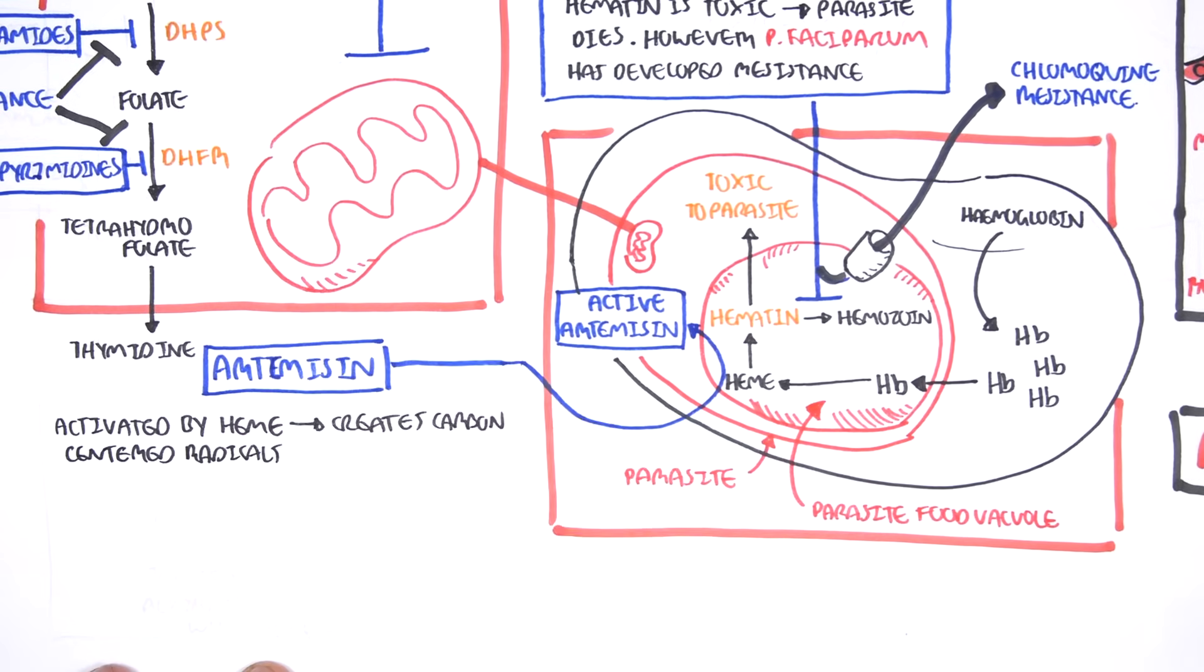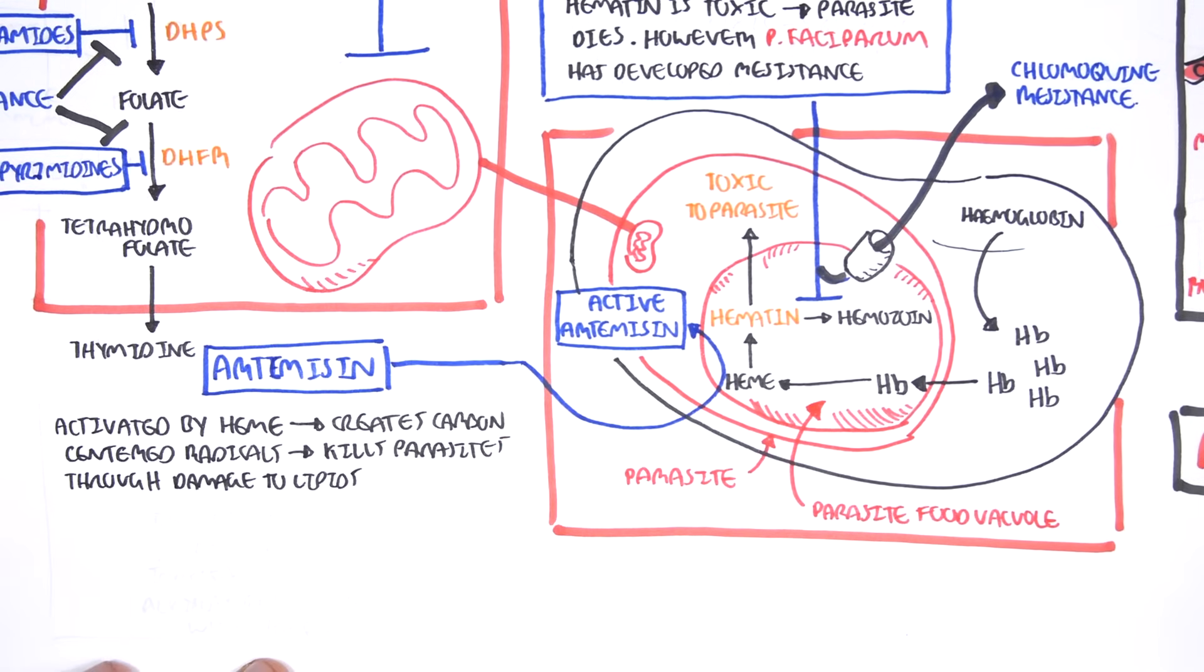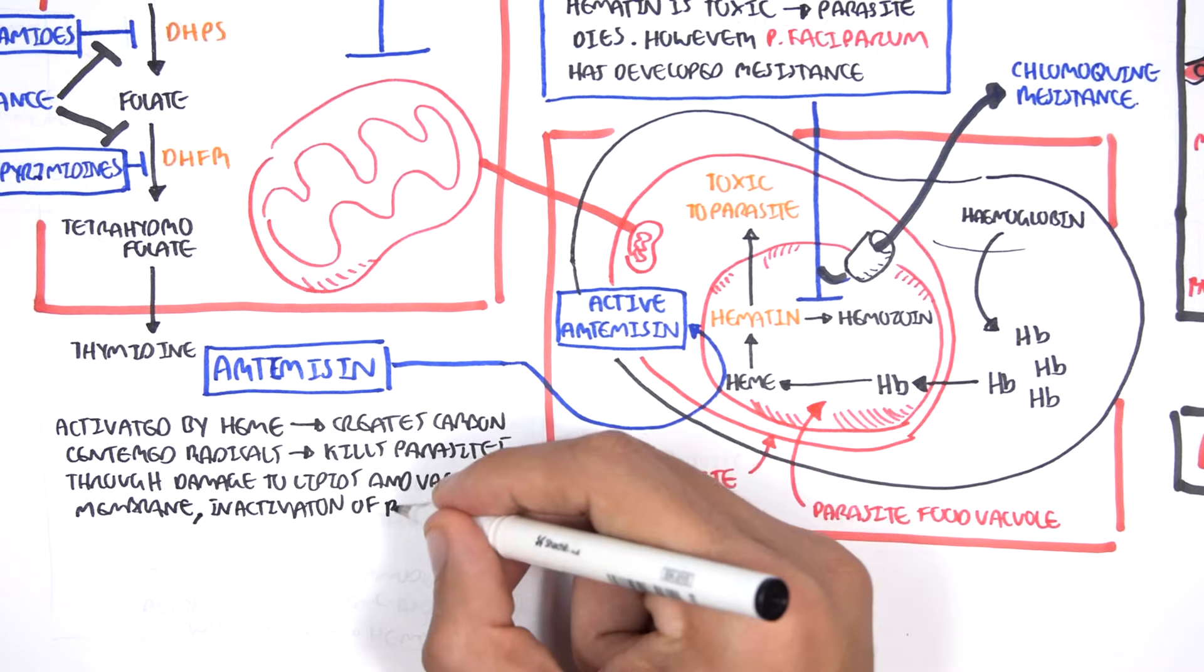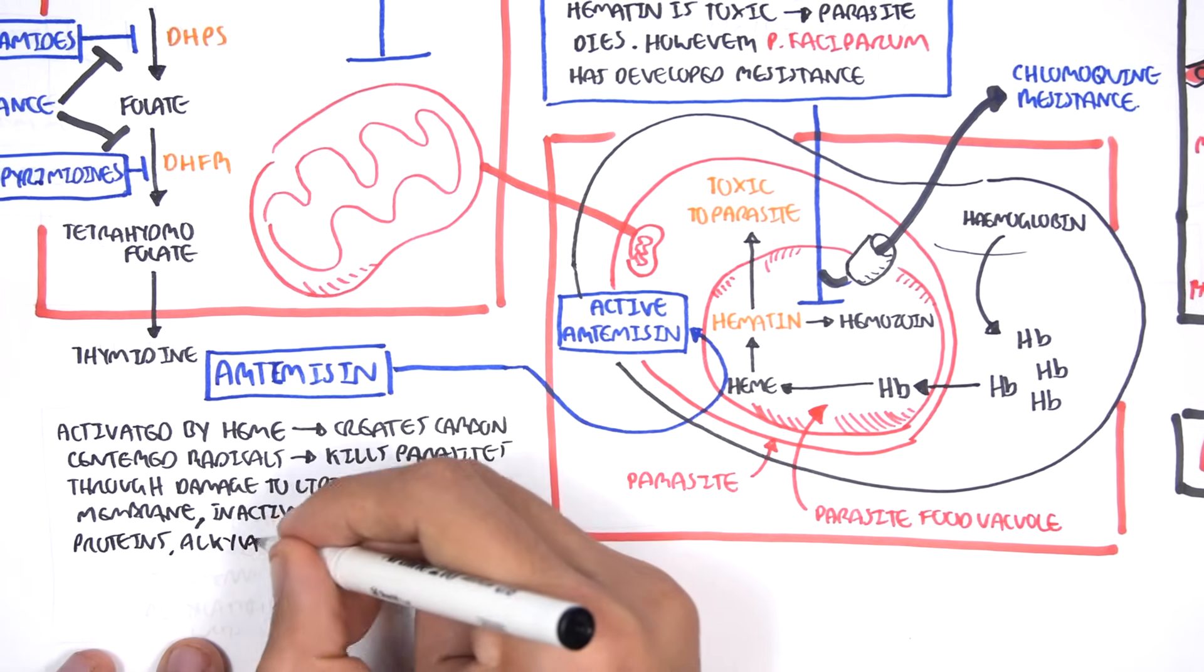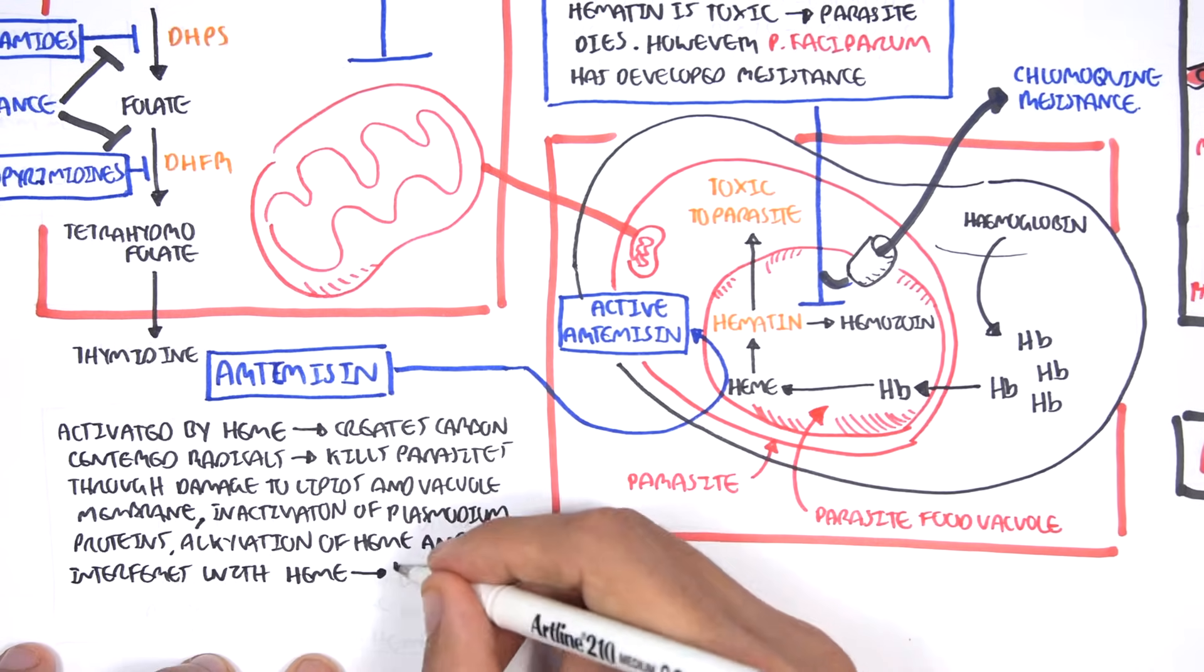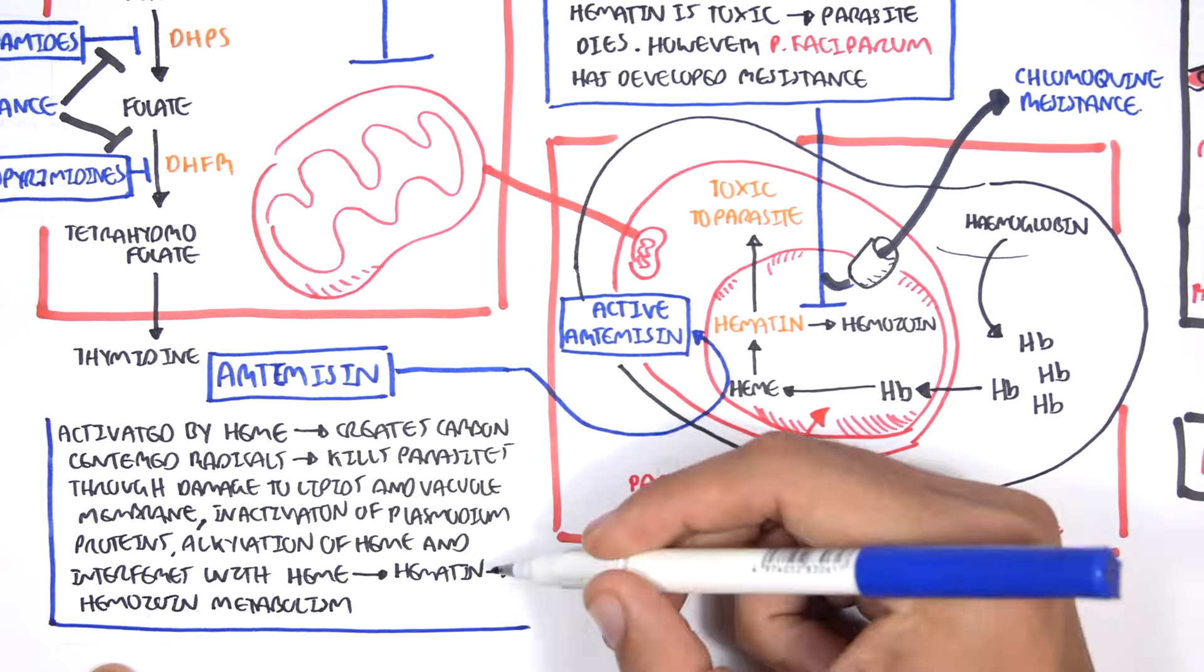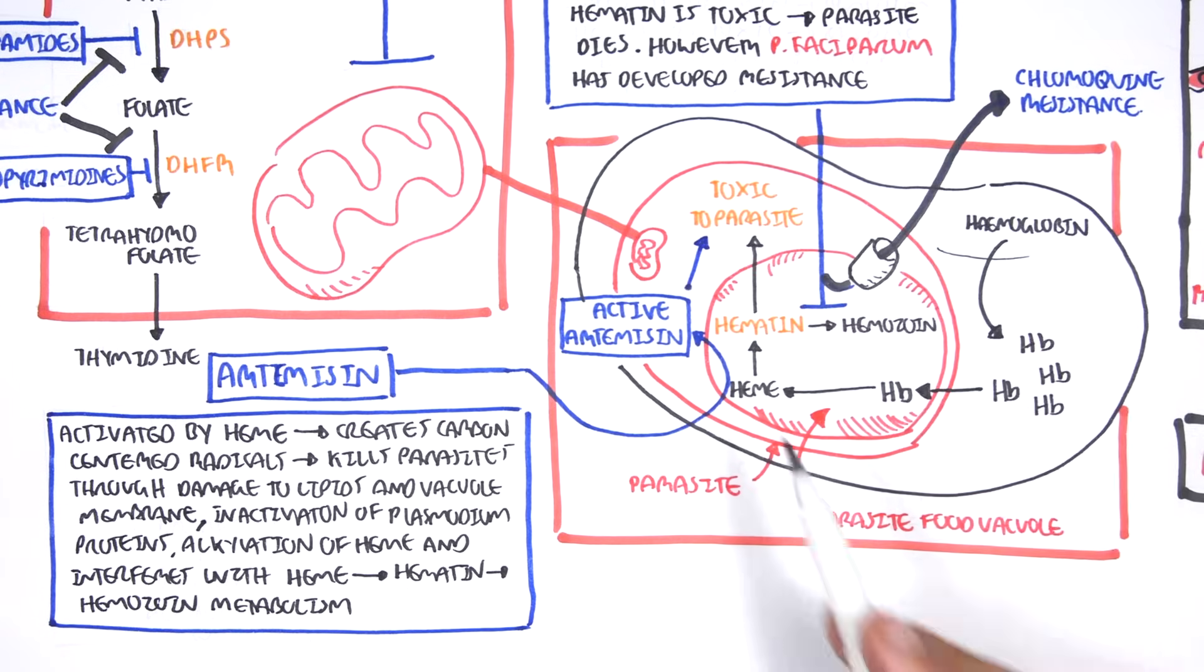The free radicals formed kills the parasites in several ways. These free radicals will kill the parasites through damage to their lipids and vacuole membranes, or they will inactivate the plasmodium proteins, alkylation of heme, and also it will interfere with the conversion of hematin to hemozoin. Thus, it will increase hematin in the parasite, which is toxic to the parasite. All in all, active artemisinins is toxic to the parasite.